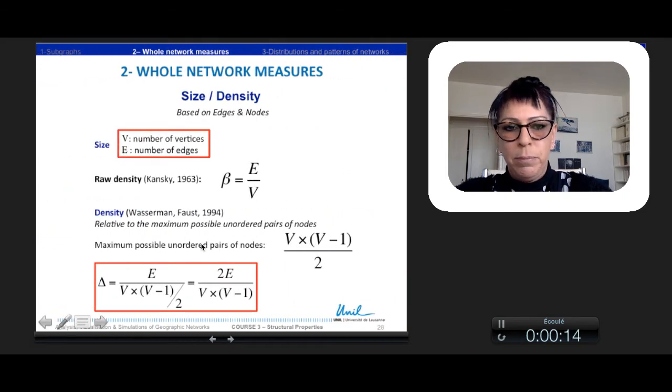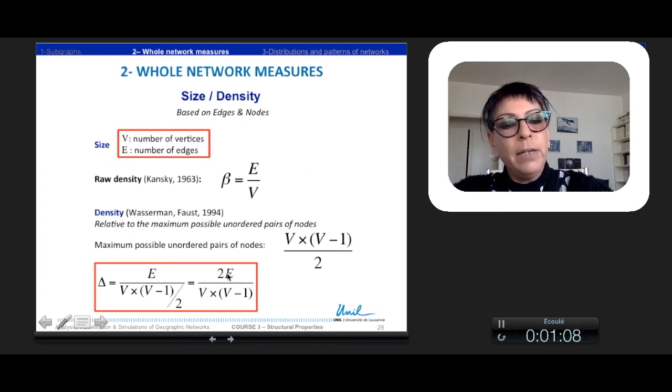The most simple measure of a network is according to its number of vertices, V, or number of edges, E. Kansky proposed a raw density which is simply the number of edges divided by the number of vertices. But in the meantime, sociologists propose a more standardized index relative to the maximum possible unordered pair of nodes. So this maximum is V multiplied by V minus 1 divided by 2 for a non-oriented network. And so the density is now the number of edges divided by this multiplication of vertices multiplied by vertices minus 1.